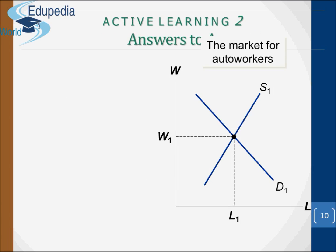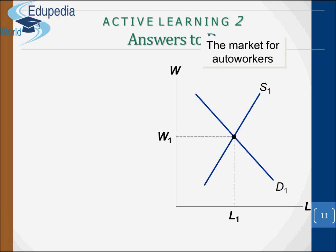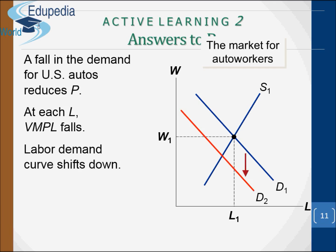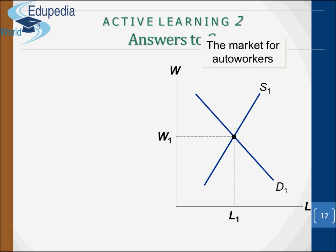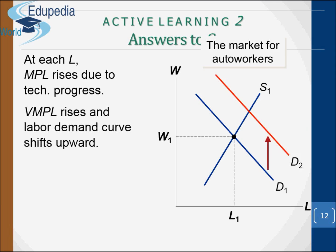Here are the answers. Scenario A: the retirement of baby boomer auto workers shifts supply leftward — W rises and L falls. Scenario B: falling demand for US autos reduces P; at each L, VMPL falls and the labour demand curve shifts down, so W and L both fall. Scenario C: at each L, MPL rises due to technological progress; VMPL rises and the labour demand curve shifts outward, so W and L increase.